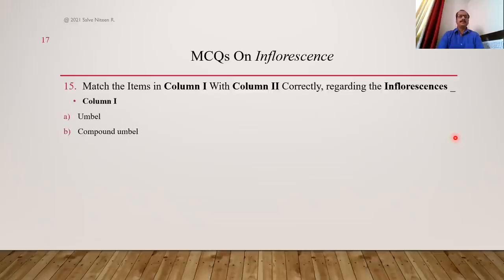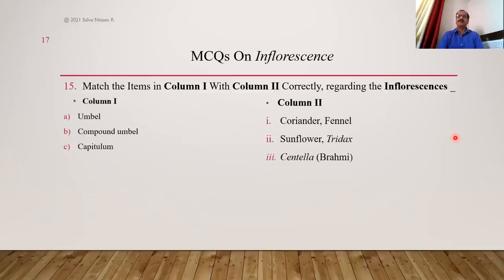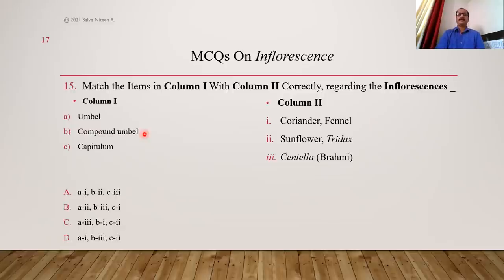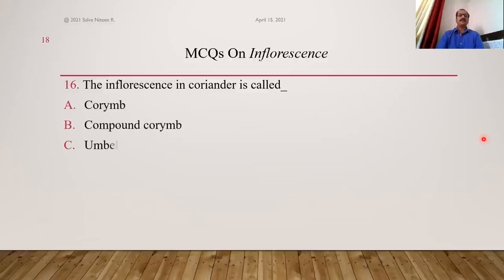Again matching — umbel, compound umbel, capitulum inflorescence types given with examples. Coriander and fennel are examples of compound umbel; sunflower and Tridax show capitulum (head type); Centella asiatica (Brahmi, a medicinal plant) has simple umbel type of inflorescence. After matching, option C is the right answer. The inflorescence in coriander is compound umbel — option D is the right answer for that direct question.